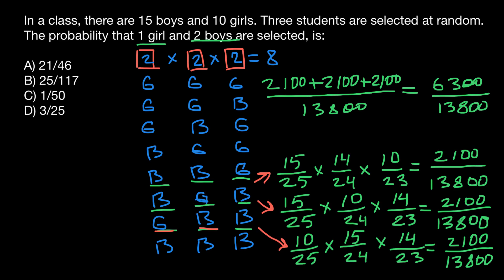And right away, we can reduce this number by 100, so we are going to get 63 over 138. And we can reduce this number by 3, and our final answer would be 21 over 46. And as you see, this is answer A.